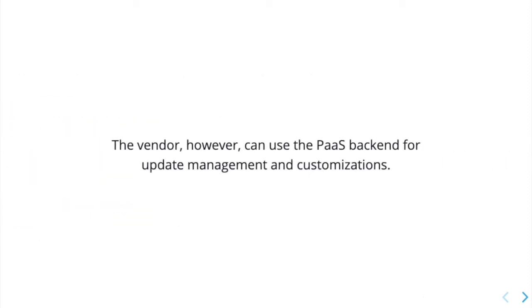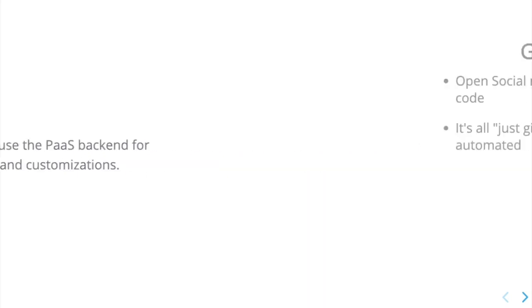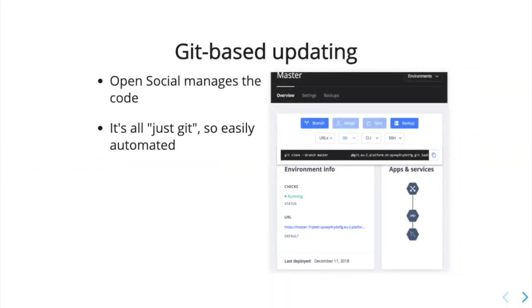Then, all of the community instances can be accessed by the vendor to manage updates and apply customizations. OpenSocial manages all the code in the PaaS fleet. Since it's all just Git in the background, they can automate it, no matter the number of communities, very easily.